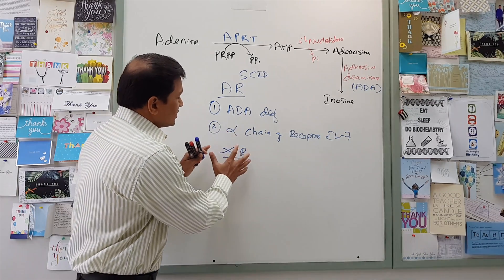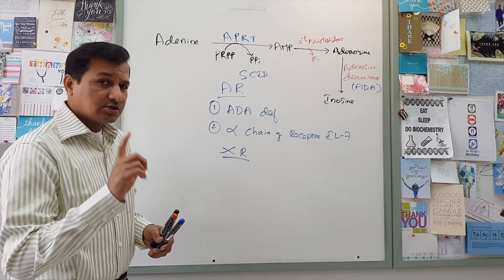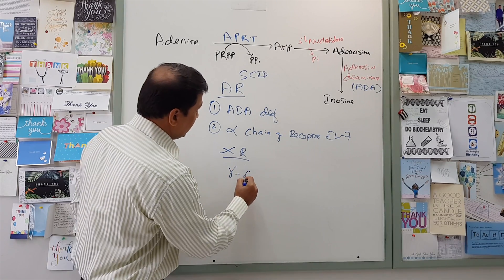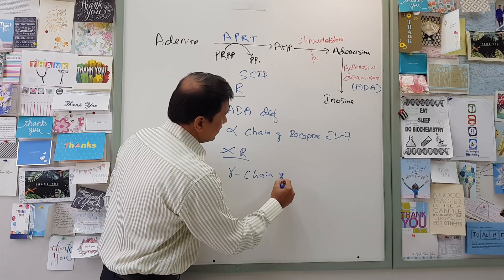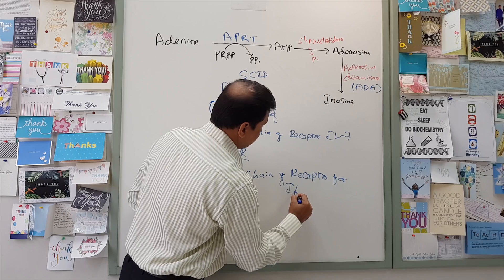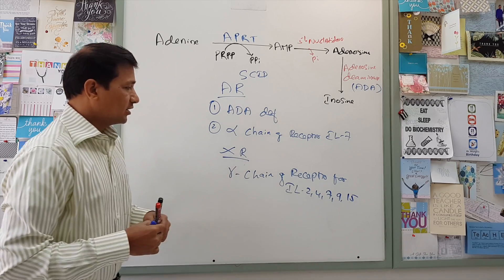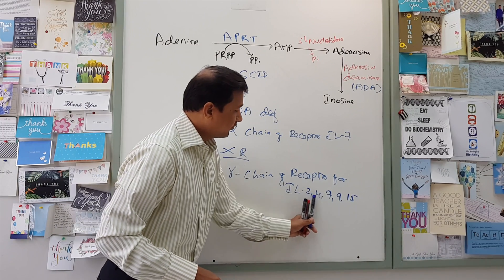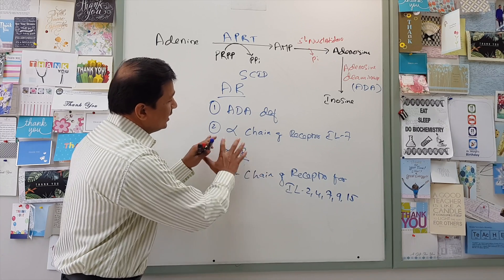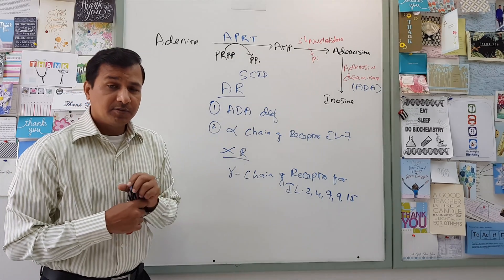Now let us look at the cause for X-linked recessive SCID. The cause is a mutation in the gene coding for the gamma chain of receptors for interleukins 2, 4, 7, 9, and 15. A mutation in the gene coding for the gamma chain of these interleukin receptors gives rise to X-linked recessive severe combined immunodeficiency disease.